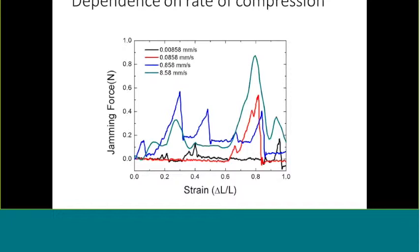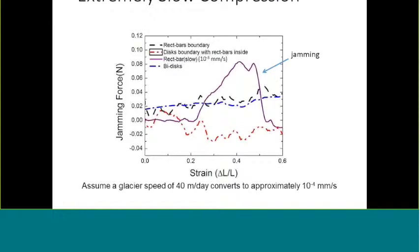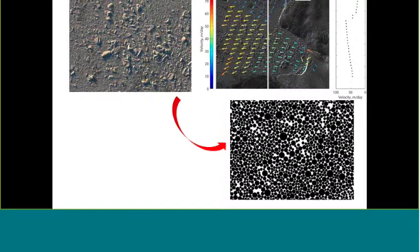Here's an expanded view of the rectangular bars going incredibly slowly — the slowest speed we could reach — to show the scale and resolution of the force measurements and the comparison to what a glacier speed might be if you scale our system. We got down to 10⁻³ millimeters per second; at a glacier speed of 40 meters per day, scaling our system to actual fjord dimensions we would have liked to get down to 10⁻⁴, which the new system will do. We still saw jamming within good resolution, though obviously much smaller than at faster speeds.